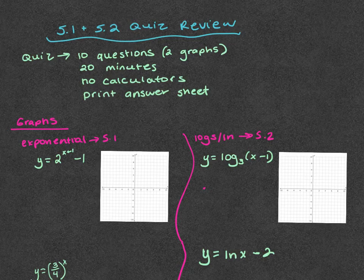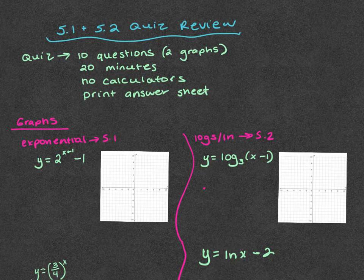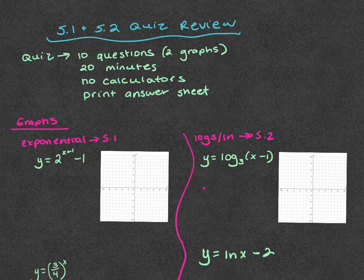Logistically speaking, there are 10 questions. Two of those questions are graphing — those are worth 14 points each because they have multiple parts where you have to find the asymptotes and all that. The rest of the eight questions are nine points a piece. There are no calculators whatsoever — no scientific, no graphing.